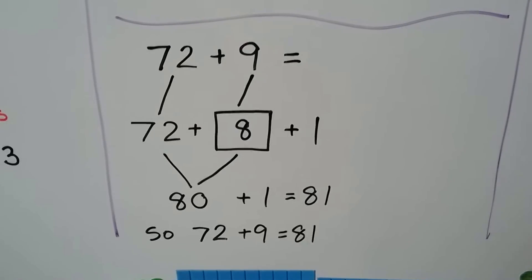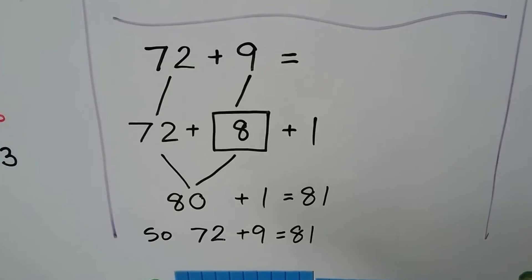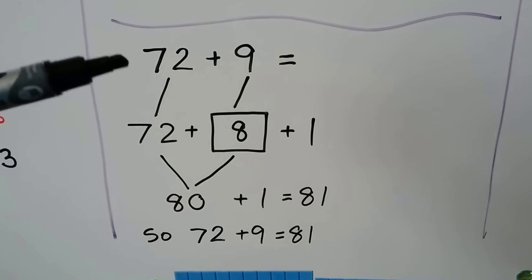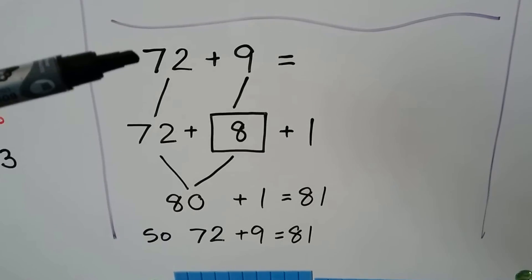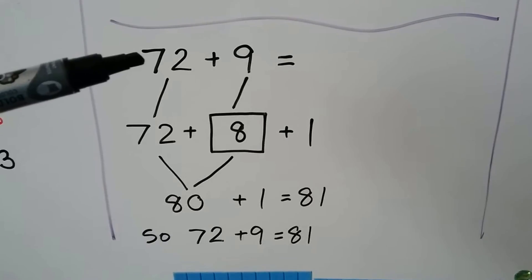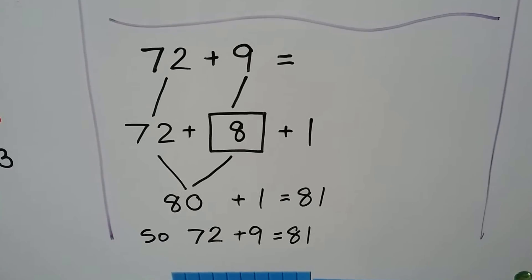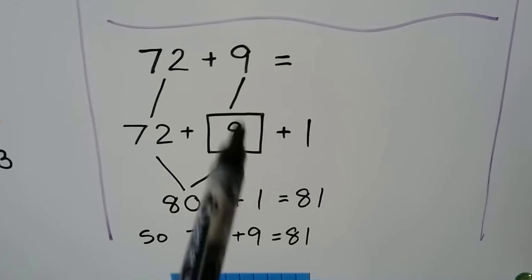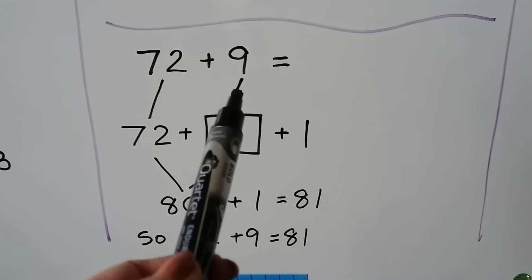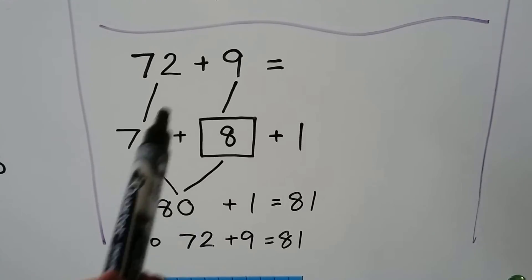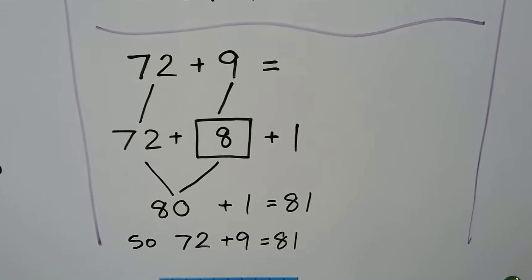Eighty plus one is equal to eighty-one. And our initial problem, seventy-two plus nine, is equal to eighty-one. We just regrouped some of the ones and gave them to the seventy-two.